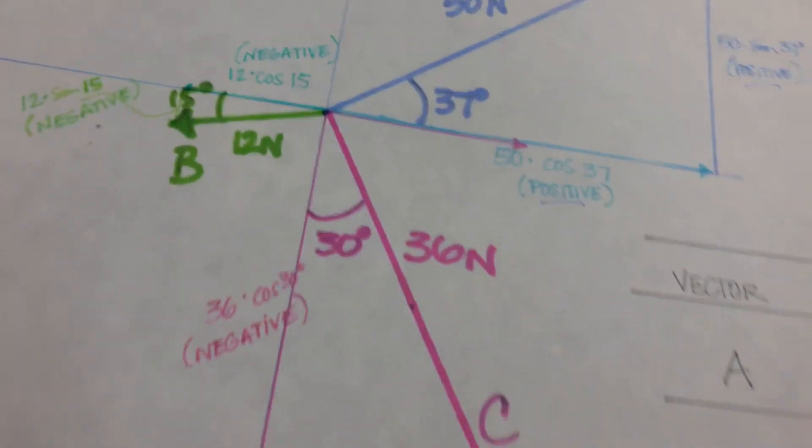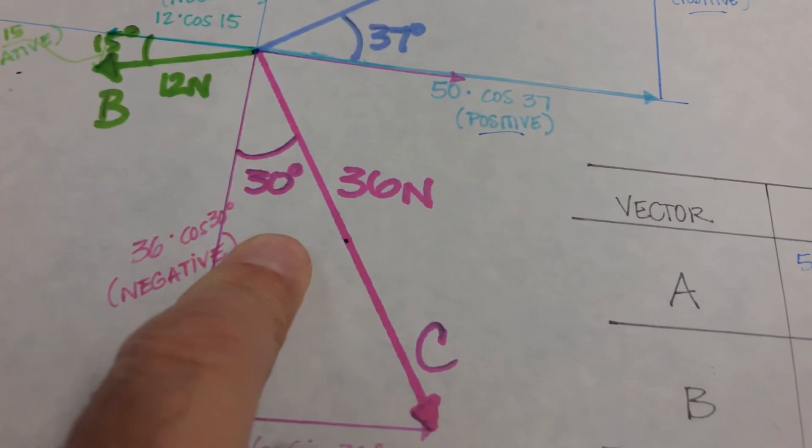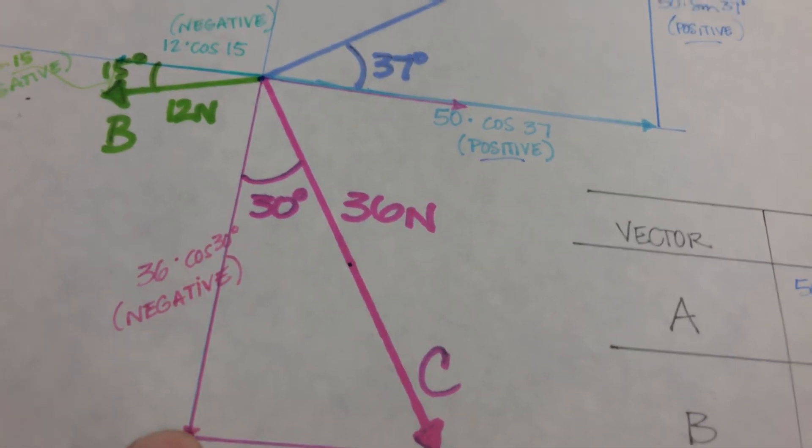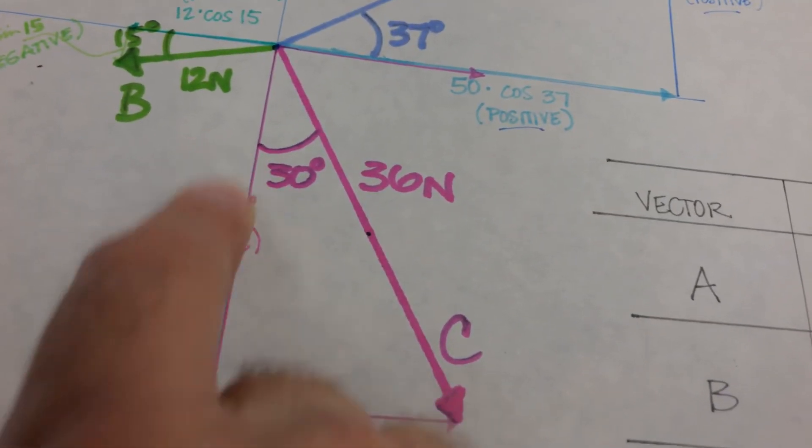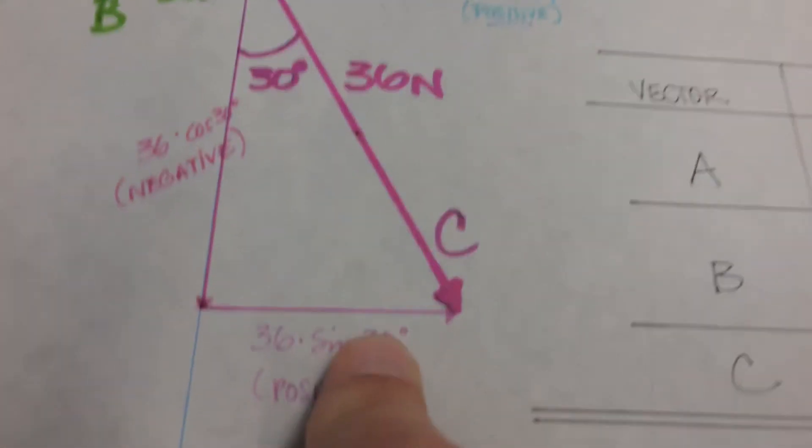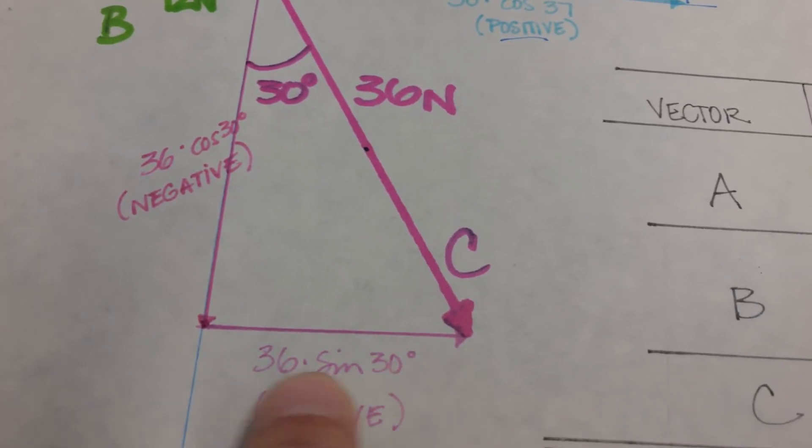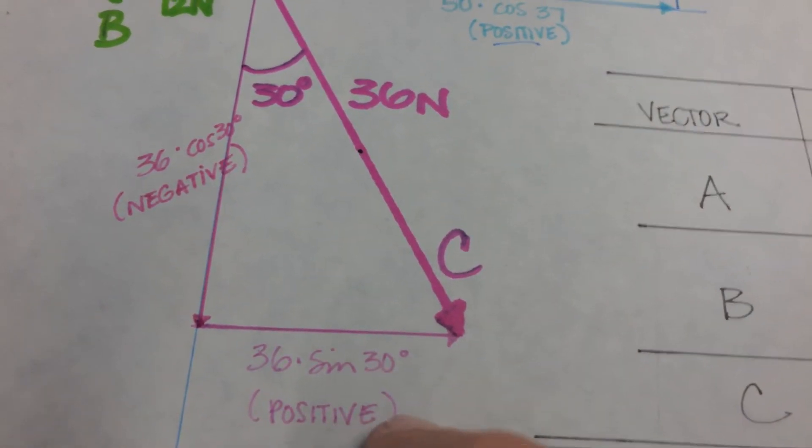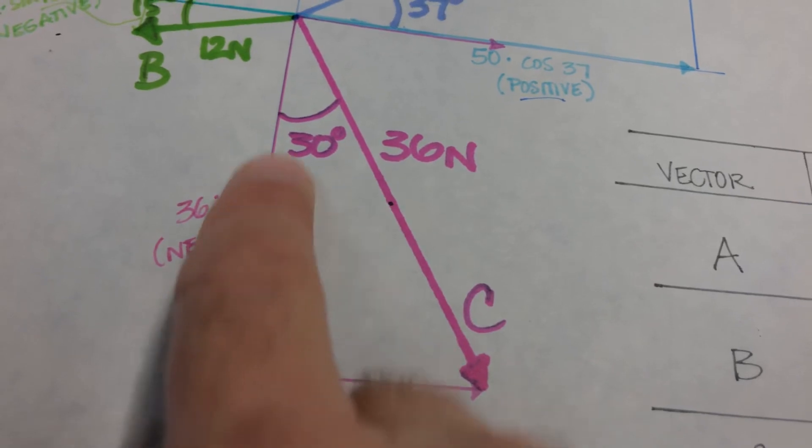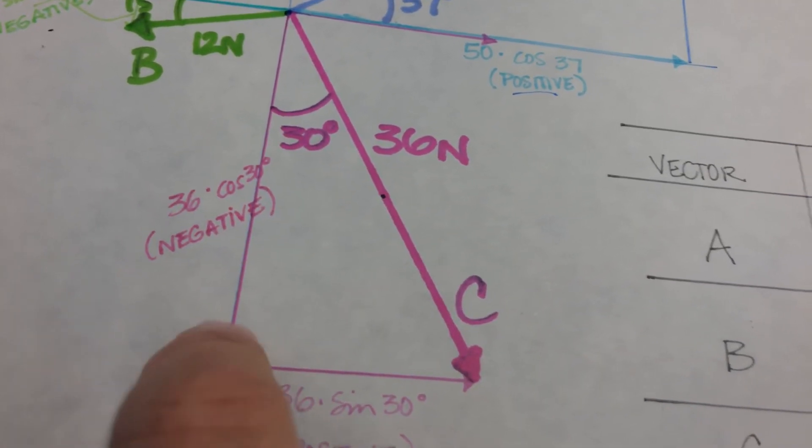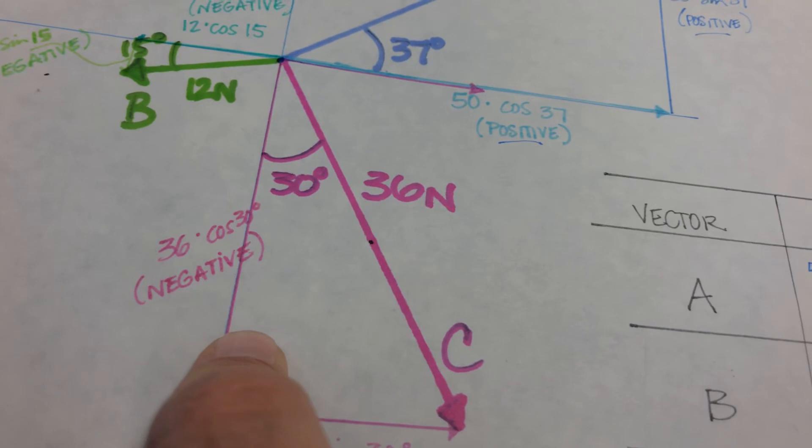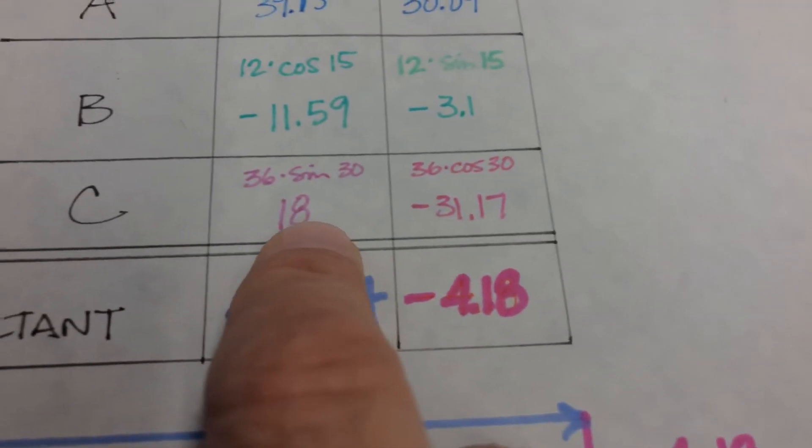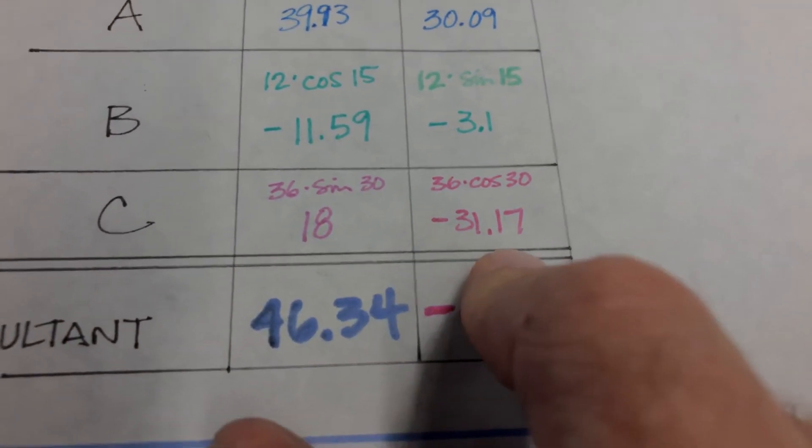C is a 36 Newton vector at a 30 degree angle from this vertical. So this is the Y, X component, 36 times sine 30, positive X, because it's in the fourth quadrant. And 36 times cosine 30 is negative Y, because it's also along the third quadrant line. So we're going to plug in our X and Y values as positive and negative.